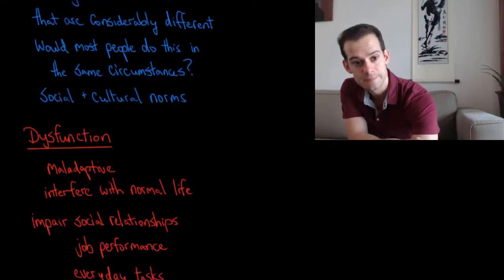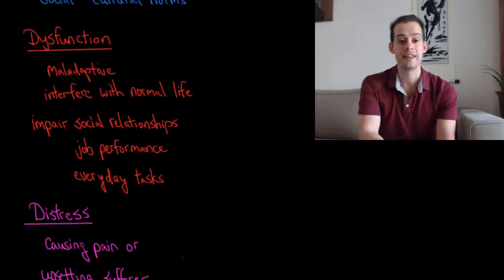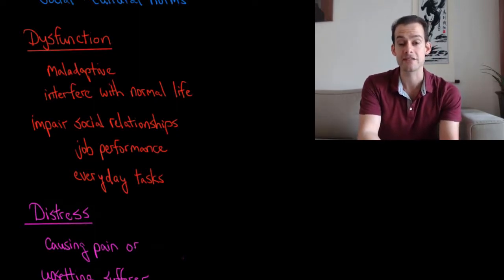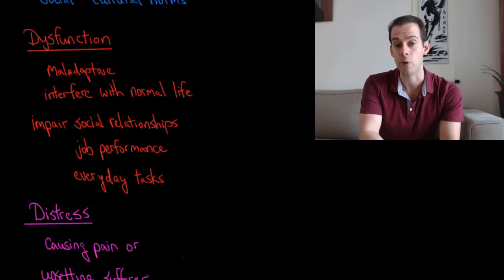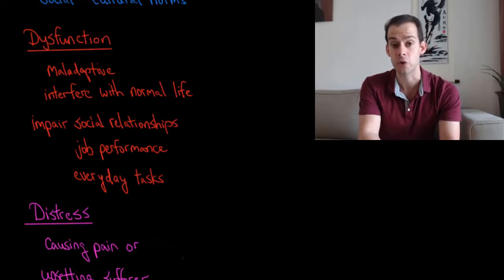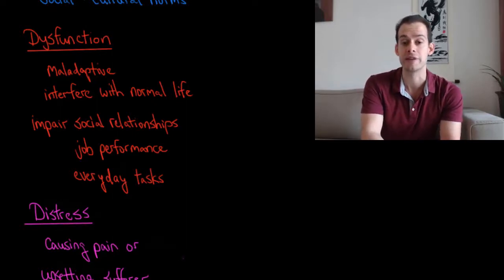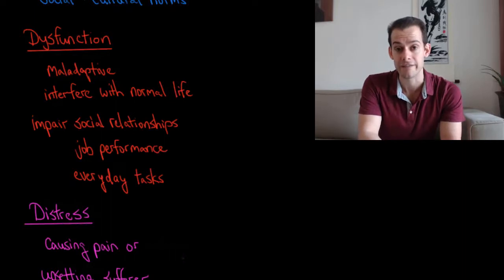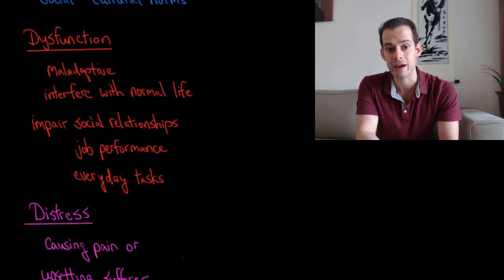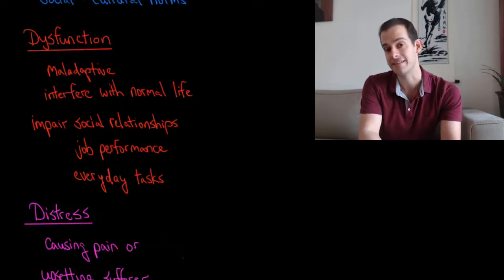We also look at dysfunction. So when we say that a symptom is dysfunctional, what we mean is that it's maladaptive, or it interferes with normal life. Now that, of course, brings that loaded term of how we determine what normal is. But generally we can say something is dysfunctional if it interferes with the person's ability to form social relationships, if it interferes with their job performance, or if it interferes with everyday tasks, the sort of necessary tasks of daily life that everyone has to accomplish. And so if a trait or a behavior is getting in the way of those things, then we say it's dysfunctional.